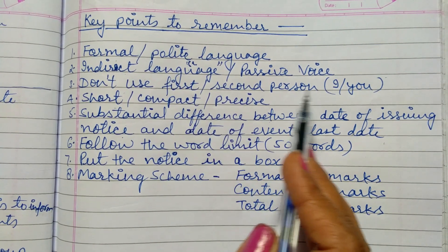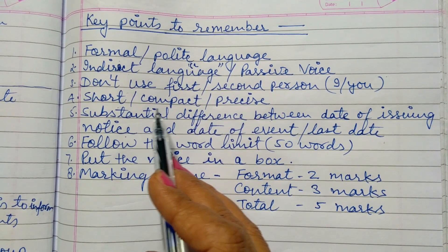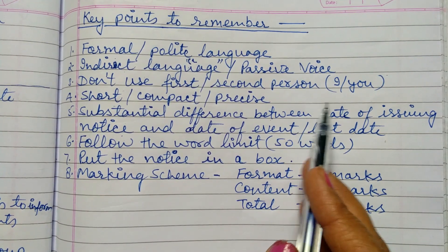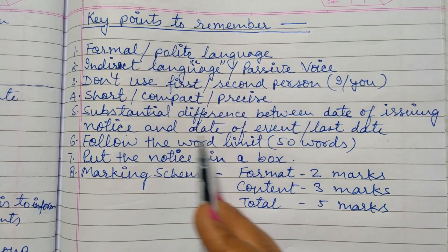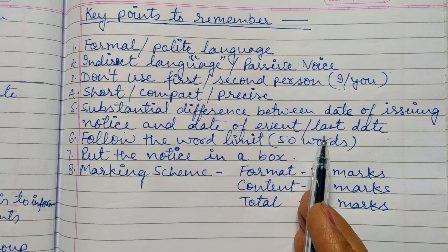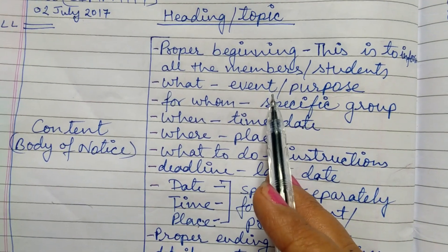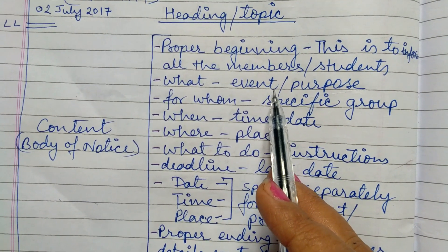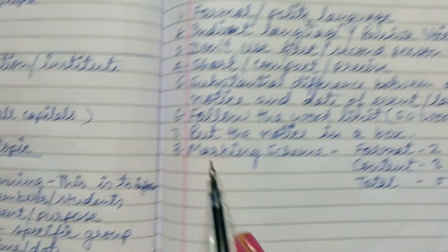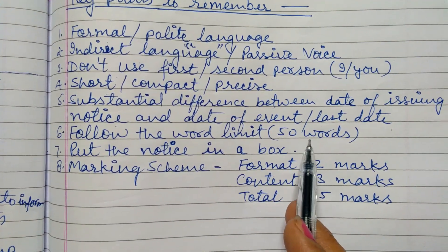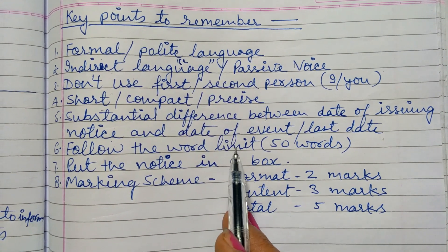We should not use first and second person pronouns, for example I, me, you, we, here, etc. The notice should be short, compact and precise. Any unnecessary details should be avoided. There should be a substantial difference between the date of issuing the notice, the date of the event, and the last date — if the notice is issued on 2nd July, there should be at least 5–6 days difference before the event and 4–5 days difference for the last date. We should follow the word limit, which is usually 50 words but may vary — we should follow whichever word limit is given in the question.